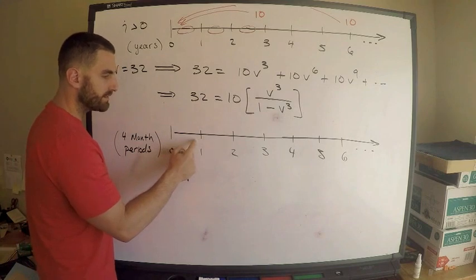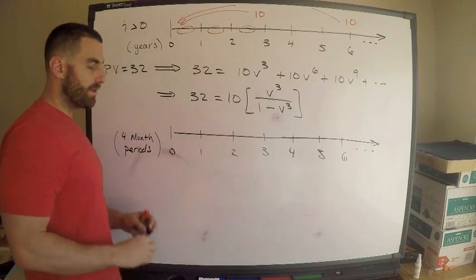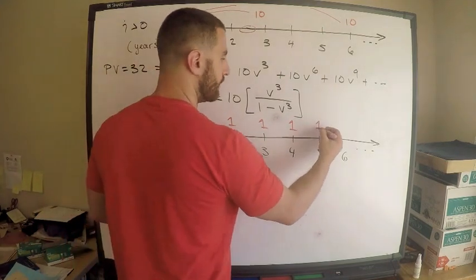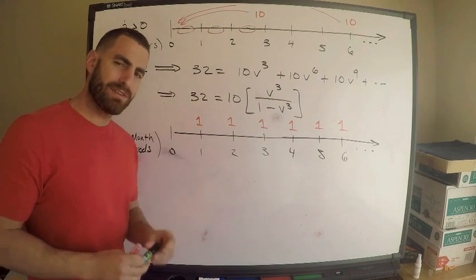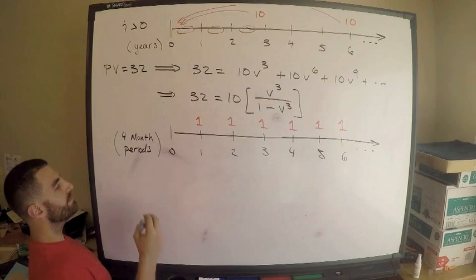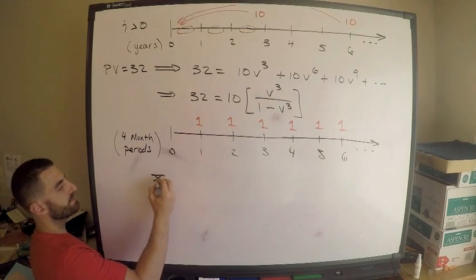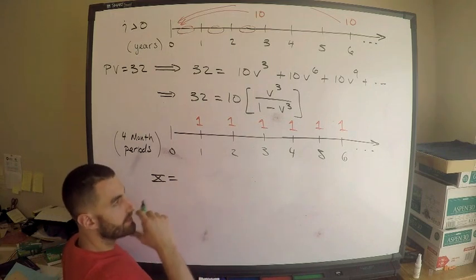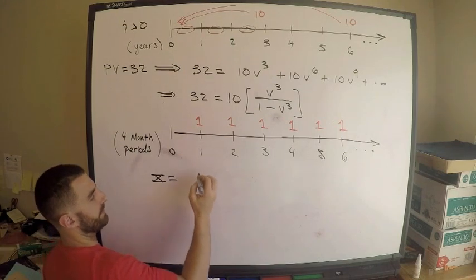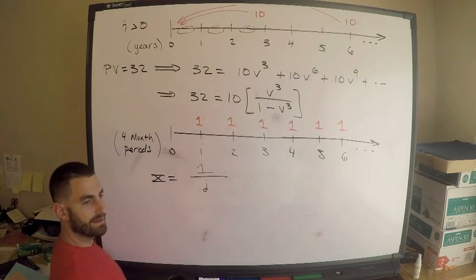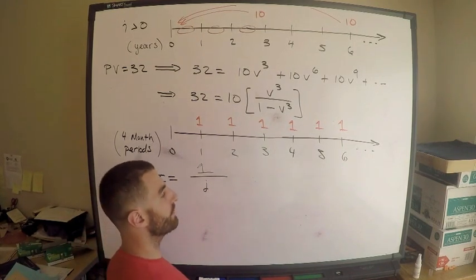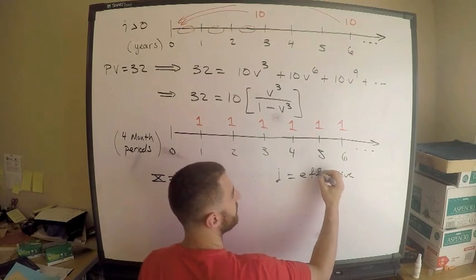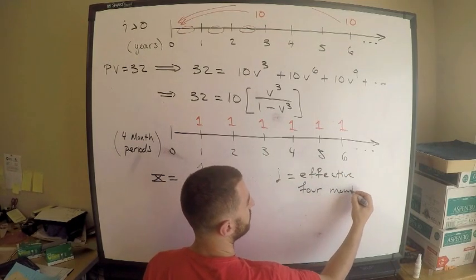Bear in mind, these up here were years. These are four month periods. In other words, this is four months, eight months, twelve months - this is actually a year right here. Now we're paying one at the end of each four month period - one, one, one, one, one. Now what is the present value of this? They tell me it's X, and X is what I want. We know that the present value, which is X, is of this perpetuity. This is easy - this converges. I can even go through the geometric argument. This is just one over the interest rate - one over J, where J is the effective four month interest rate.